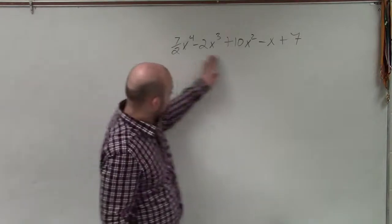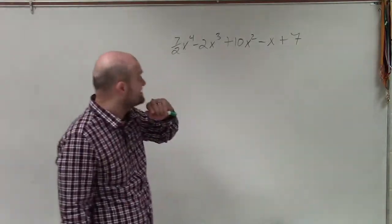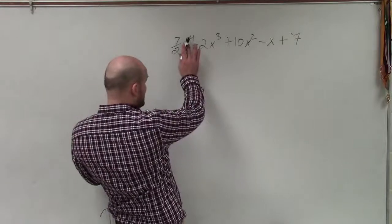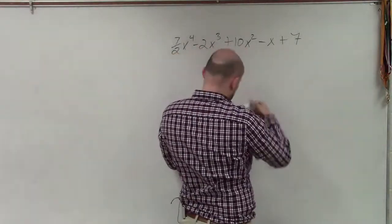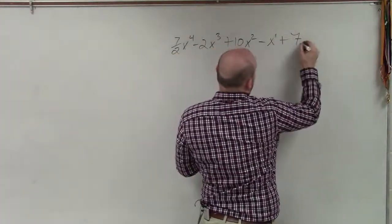The first thing we want to do is make sure that we have our polynomial in descending order, which in this case we do. We have the largest exponent starting first, and then we're going down where you could write in a 1 and an x to the 0.